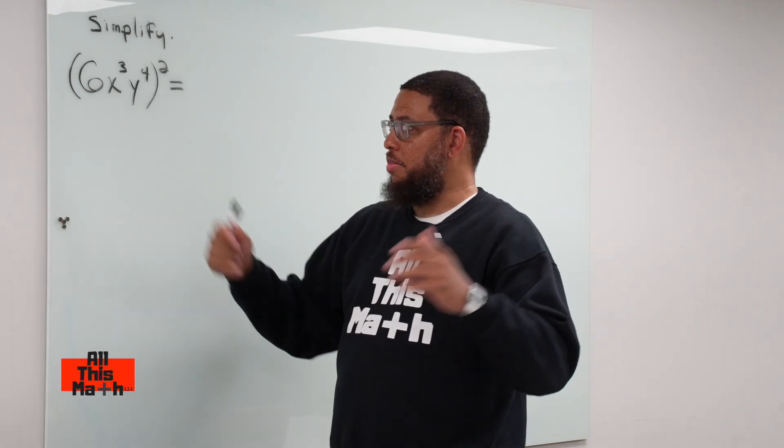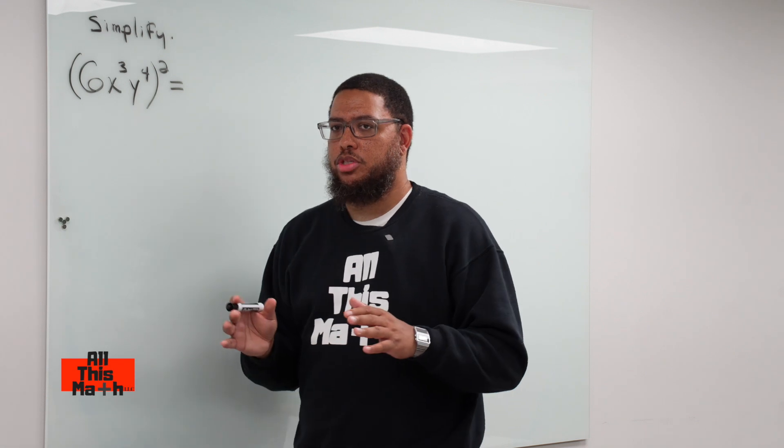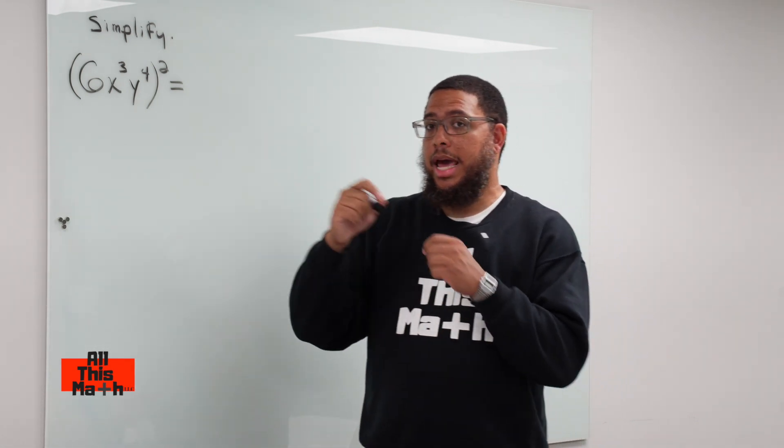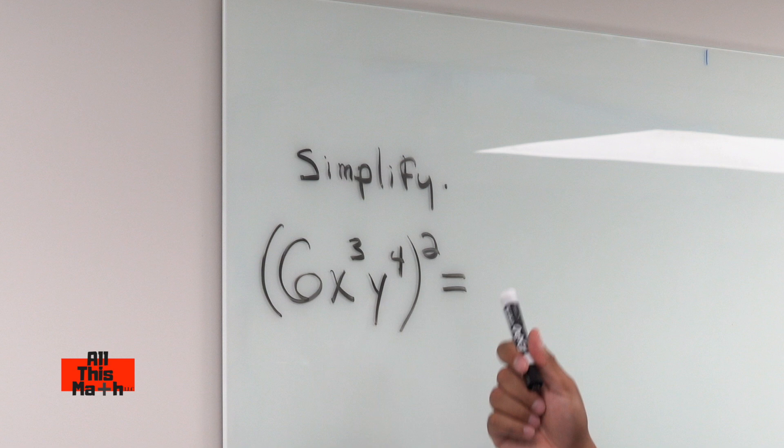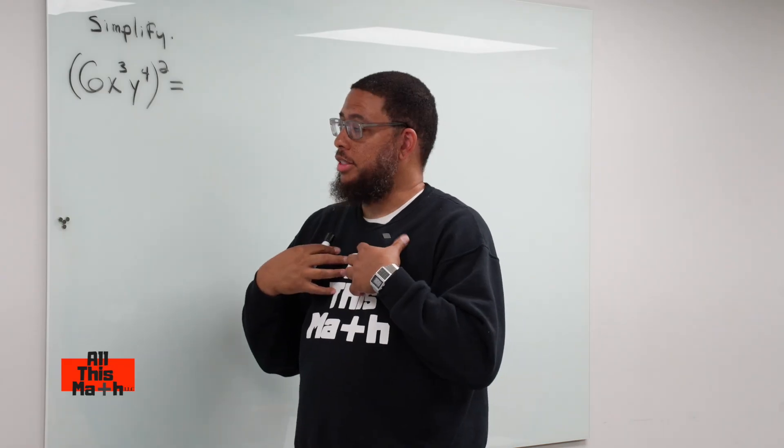We see an exponent outside parentheses. We say all raised to that power. So what we essentially do in this problem, and you don't want to confuse this with the multiplication property, in the multiplication property you're going to add the exponents together, but in this property you actually think of the distributive property.